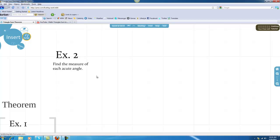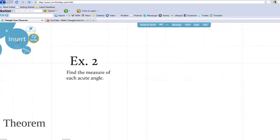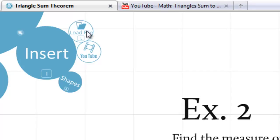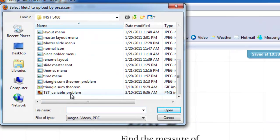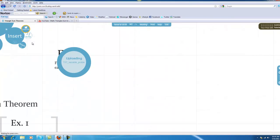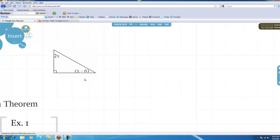What I want to do is add an example two. I already have the directions. Find the measure of each acute angle. Well, first thing I want to do is I want to add in the picture, so I'm already under Insert. I want to click Load File. I go down. I already have a problem made. I double-click on that, and it's uploading my picture.